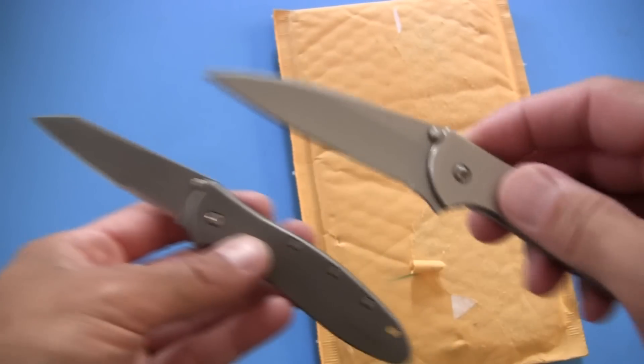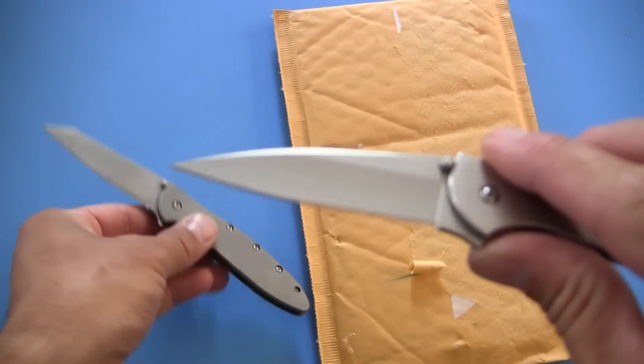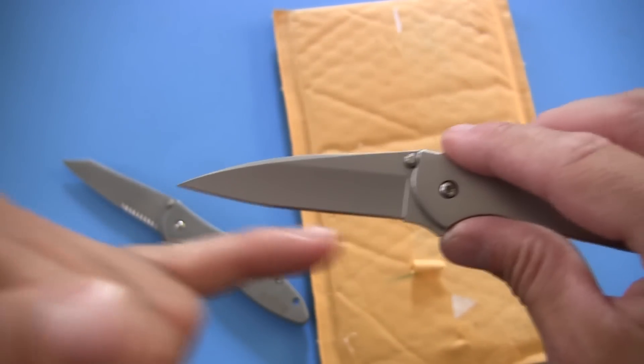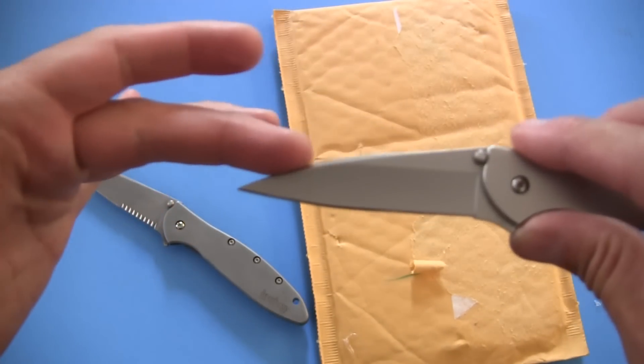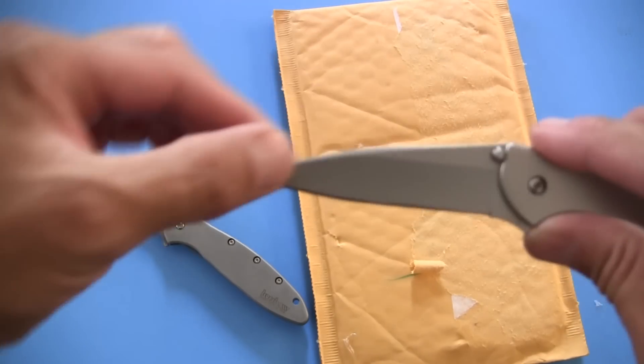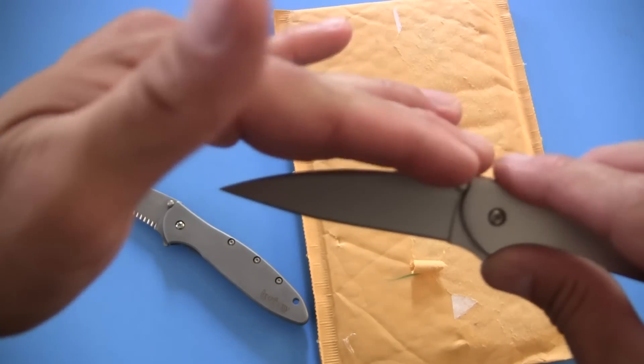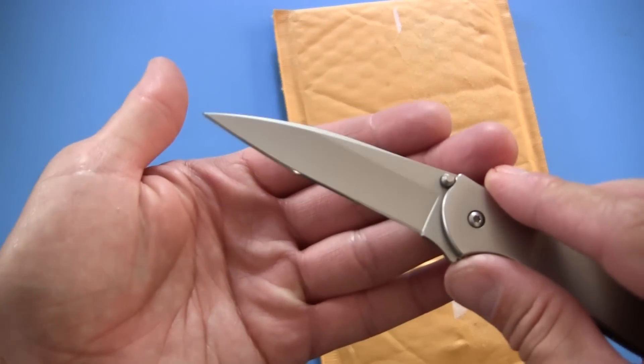You can see obviously the body is nearly identical—different finish, slightly different tone, different color, same blade length as best as I can tell. They just have that slightly different tip. This will be referred to often as a modified wharncliffe blade because it's almost flat along the belly but it does have a little bit of a curve to it.